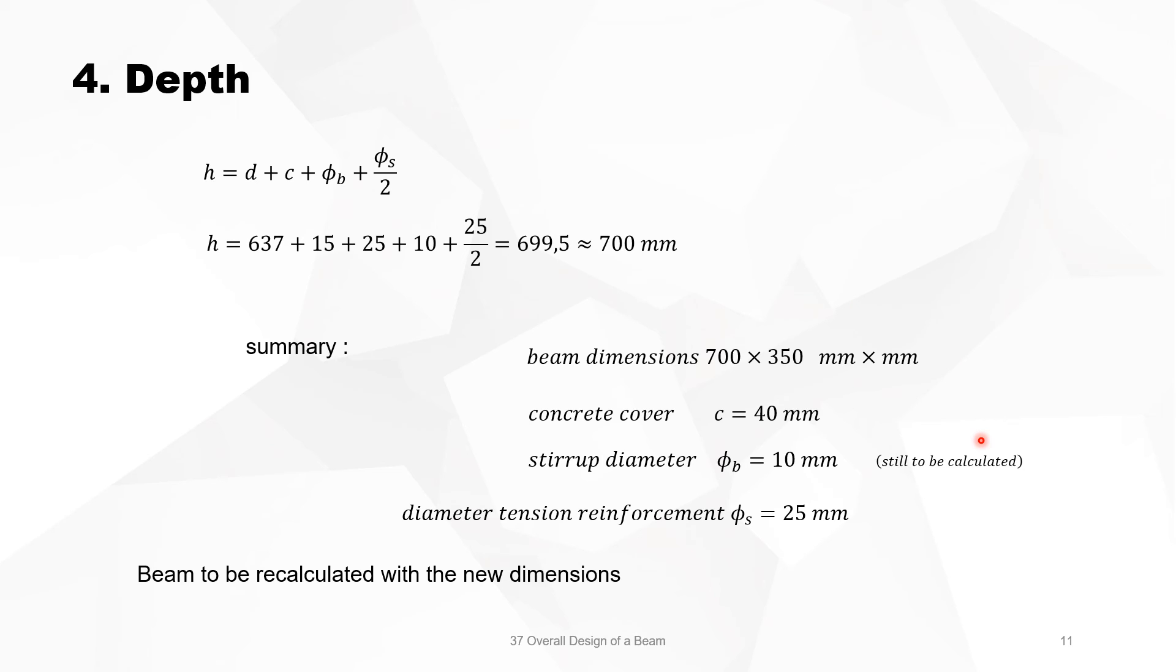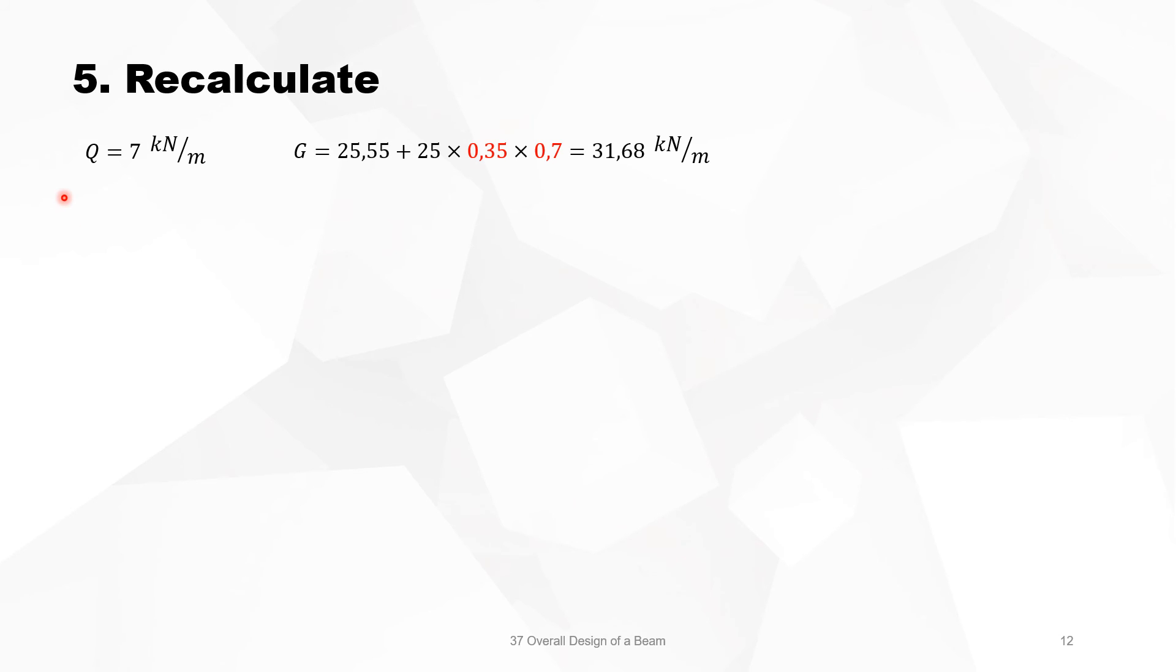Now we are going to recalculate the beam with those dimensions, because we have made the width 350 instead of 300 and the total depth 700 instead of 600, so we have to do an iteration and recalculation with those new dimensions. The mobile load was 7, the total permanent load is now 31.68 kN per meter. The load in ULS is then 53.3 kN per meter, the maximum bending moment 405 kN meter.